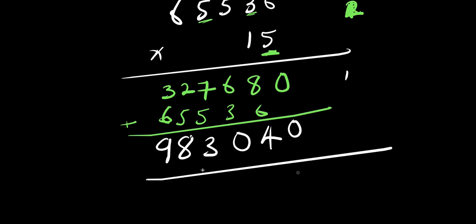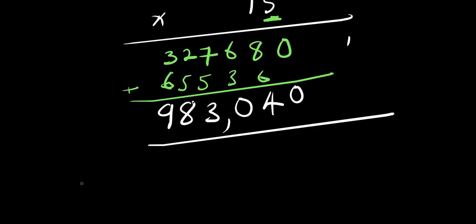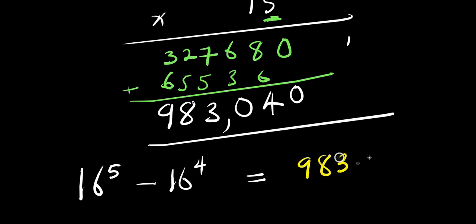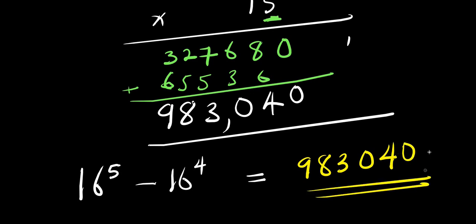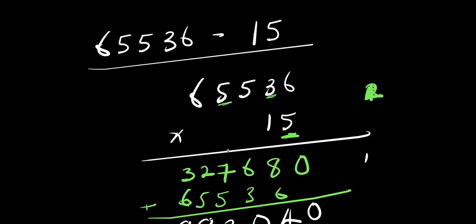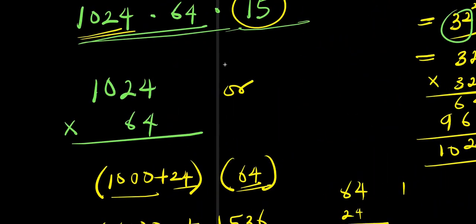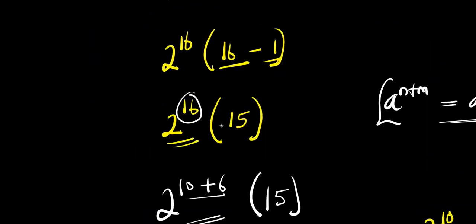So what we are getting here is 983,040. So the answer for 16 to the power of 5 minus 16 to the power of 4 equals 983,040. We have achieved this without the use of a calculator. Please don't forget to subscribe and share. Thank you and see you again.